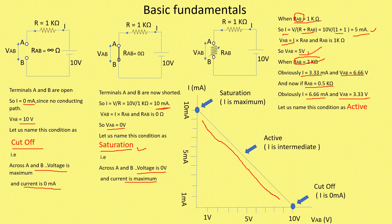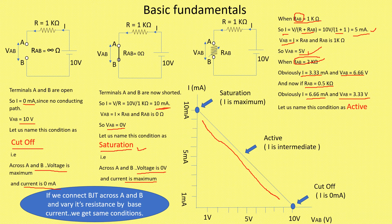Now that is the concept of cutoff, saturation, and active. This concept we will take to BJT, and when we connect BJT we will come to know what is cutoff, saturation, and active. We will see the working of BJT in brief and then go for the regions of operations of BJT. In BJT, the collector current IC is directly proportional to IB.